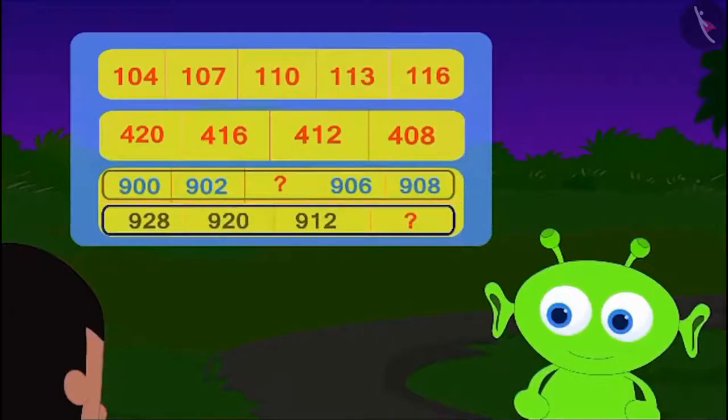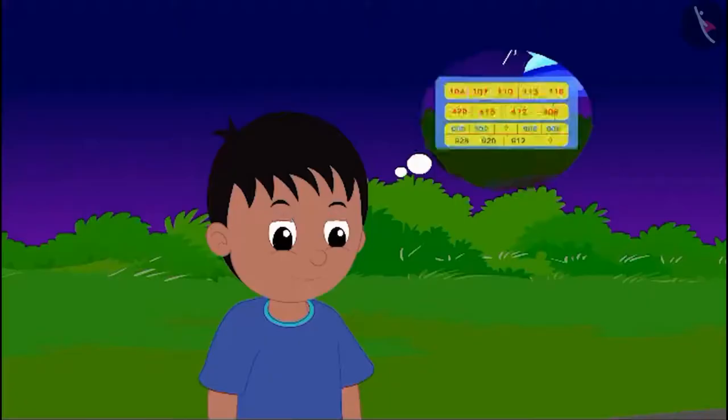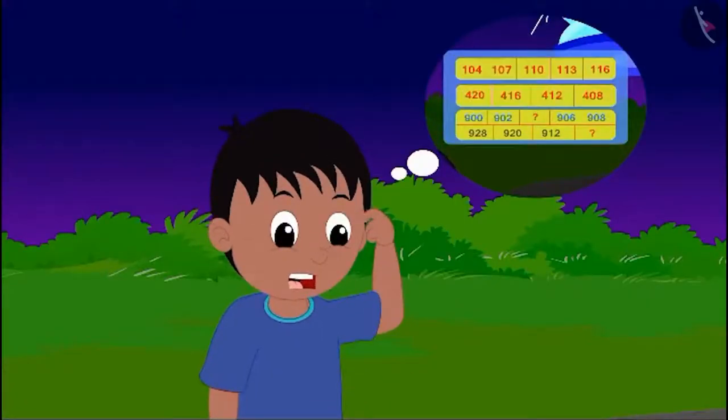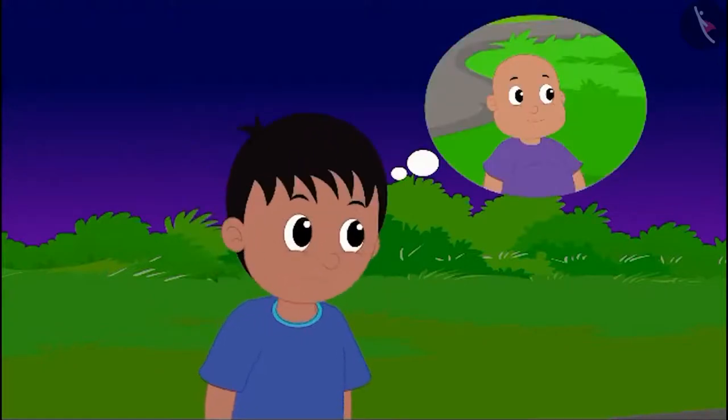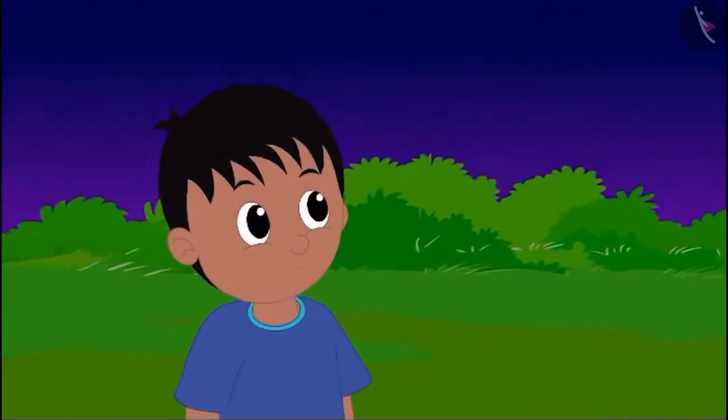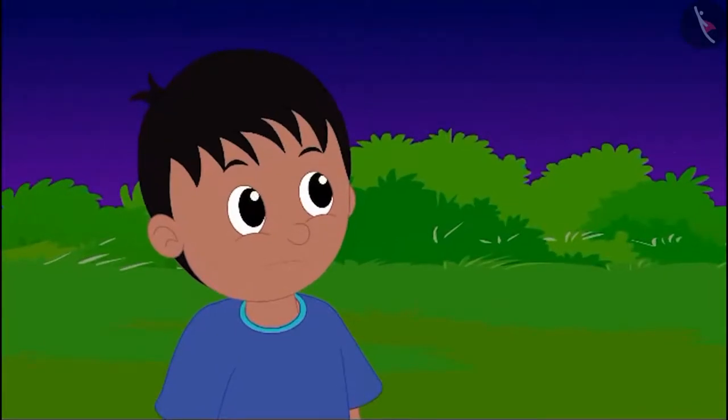This time, the alien showed Raju two number patterns and asked, What is that number which can be written in the empty spaces of both the numbers? Raju was nervous after seeing two patterns, but he needed to save Bablu under any condition.